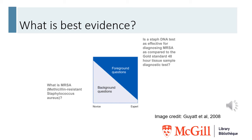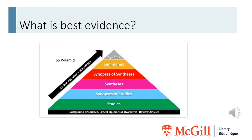What kind of evidence is best to answer your question depends on what kind of question you are asking. Generally, questions can be divided into background questions and foreground questions. Background questions are more general in nature, and foreground questions are more specific and relate to the patient for whom you are making a decision. This pyramid shows the different types of evidence you might find. To answer background questions, you'll want to start at the bottom of the pyramid, which also includes textbooks. To answer foreground questions, it's best to start at the top and make your way down until you have found evidence to answer your question.